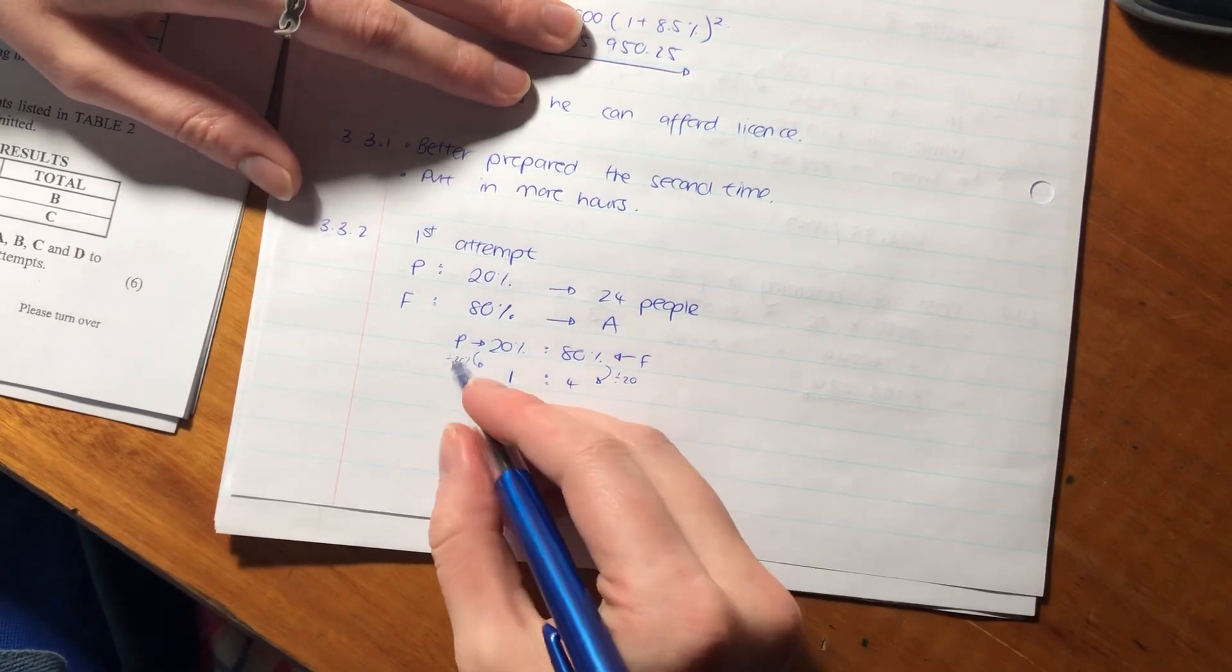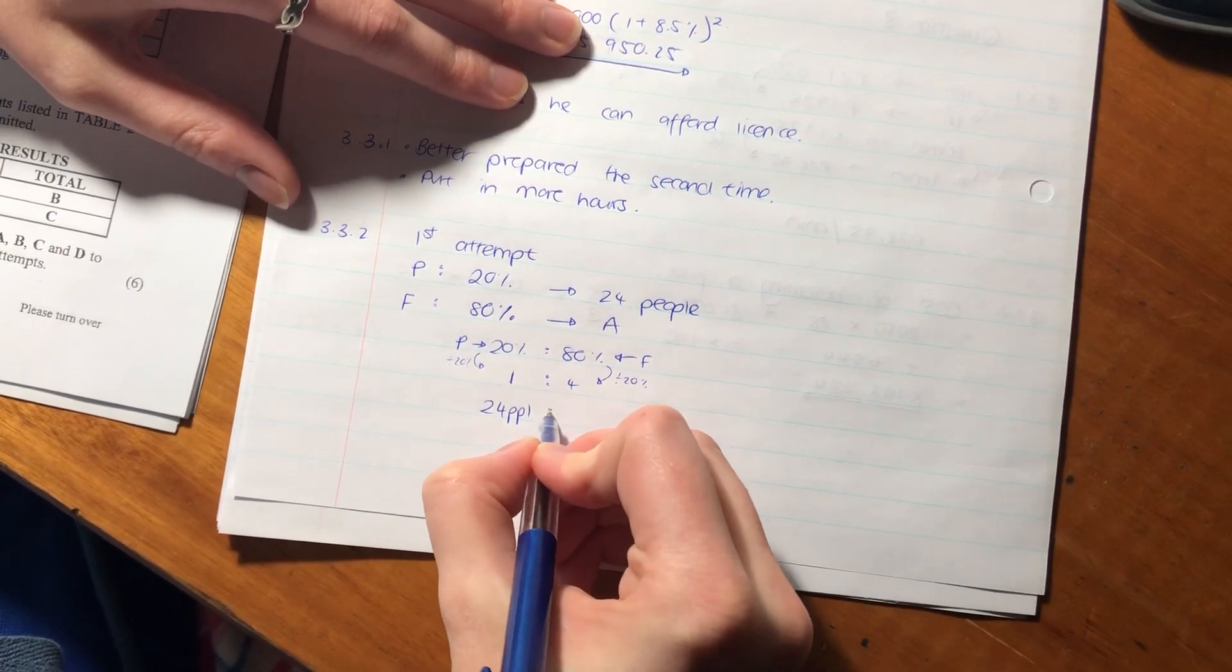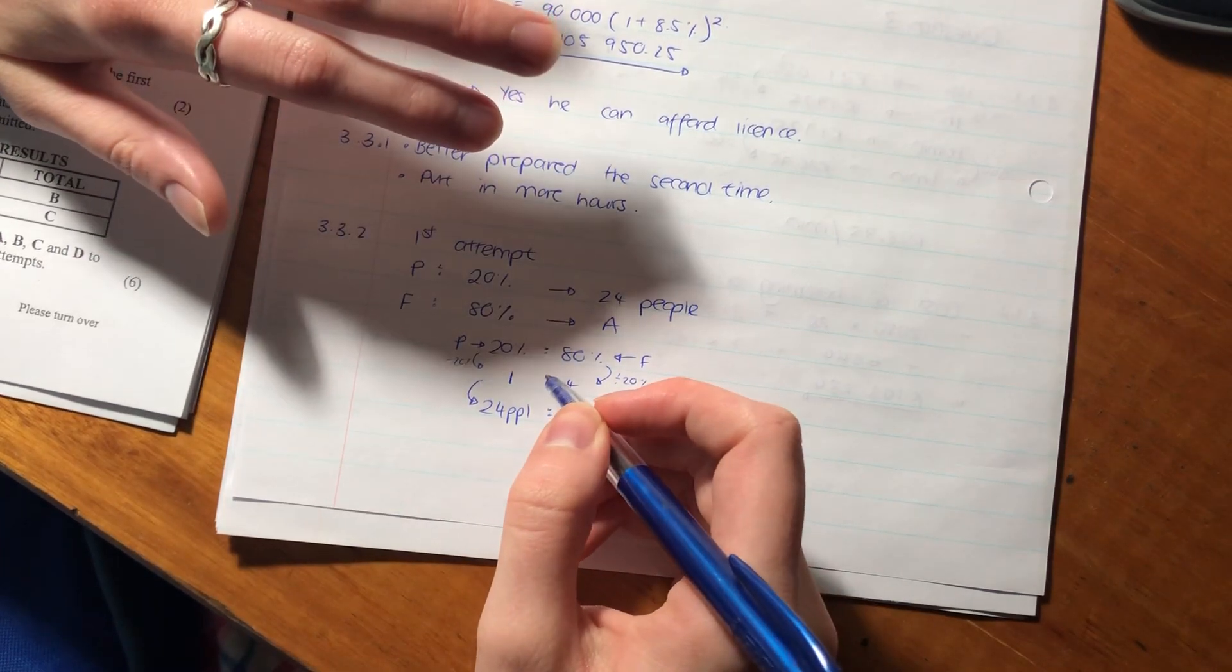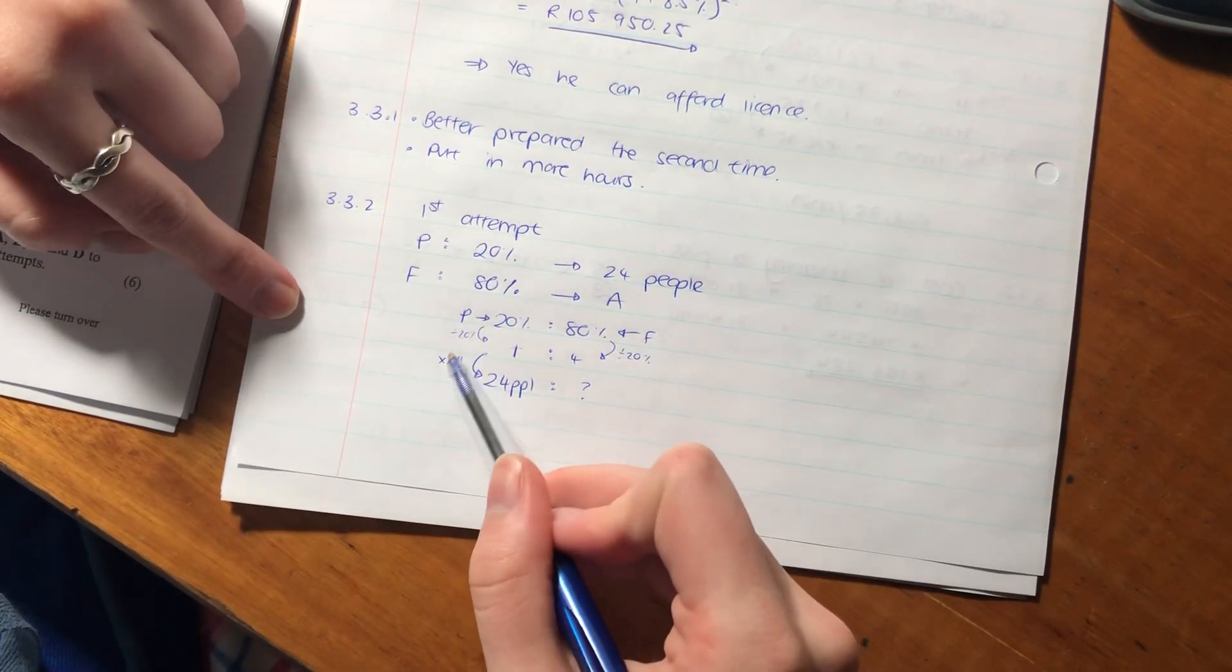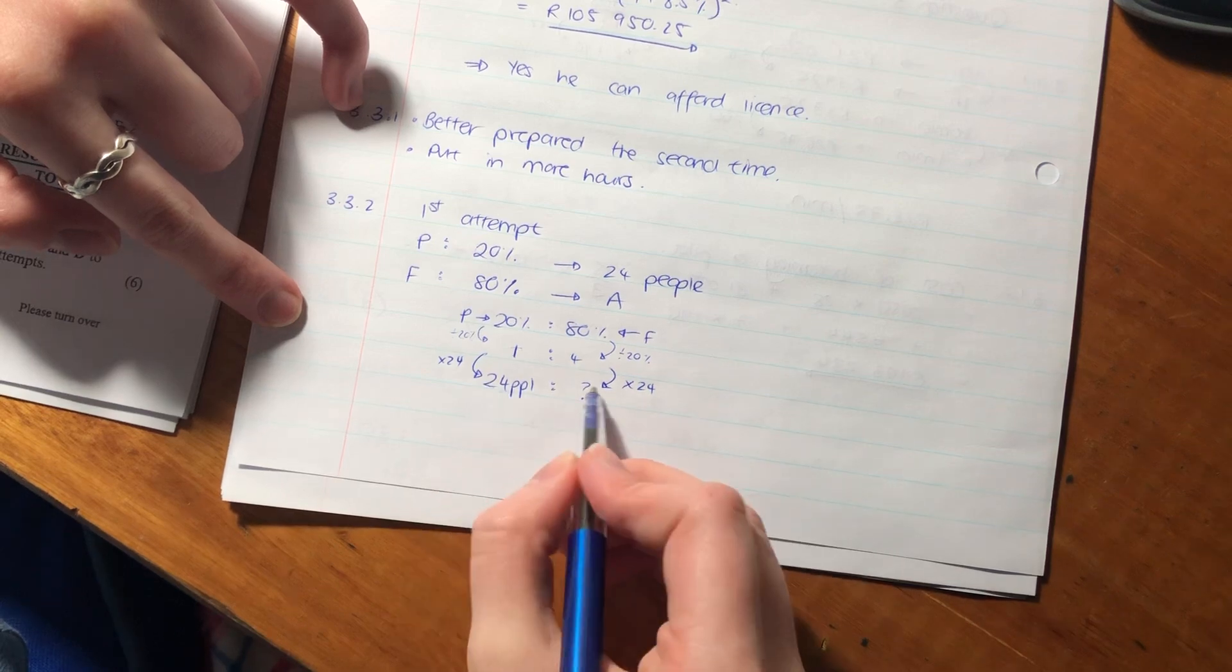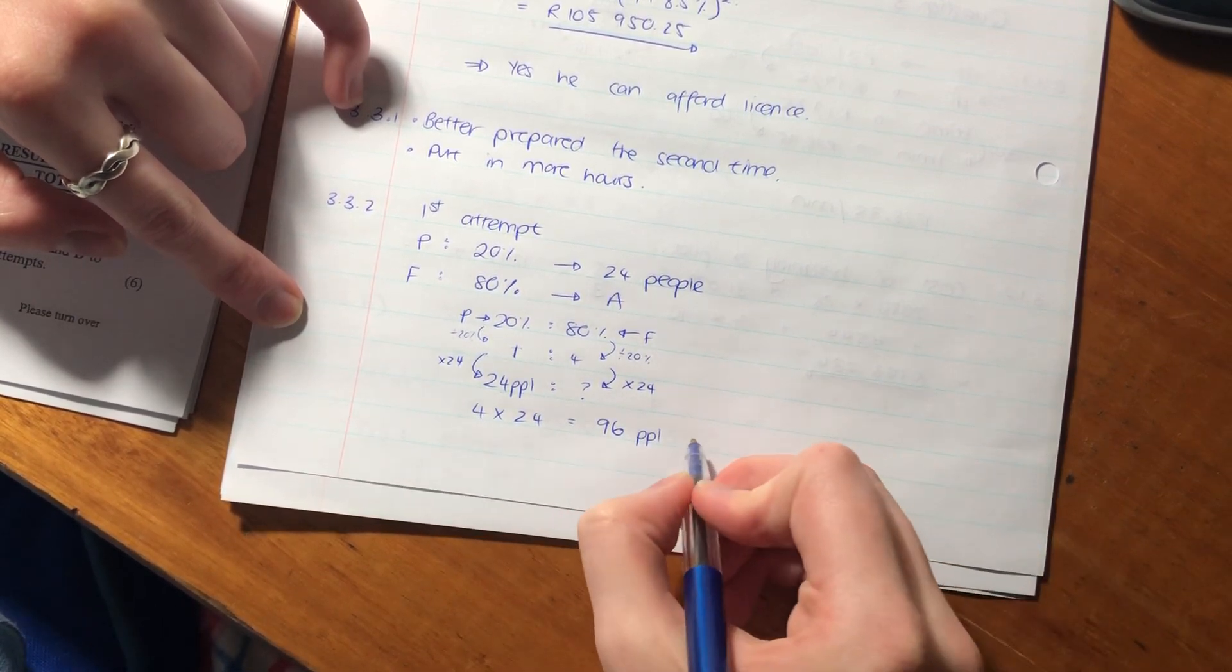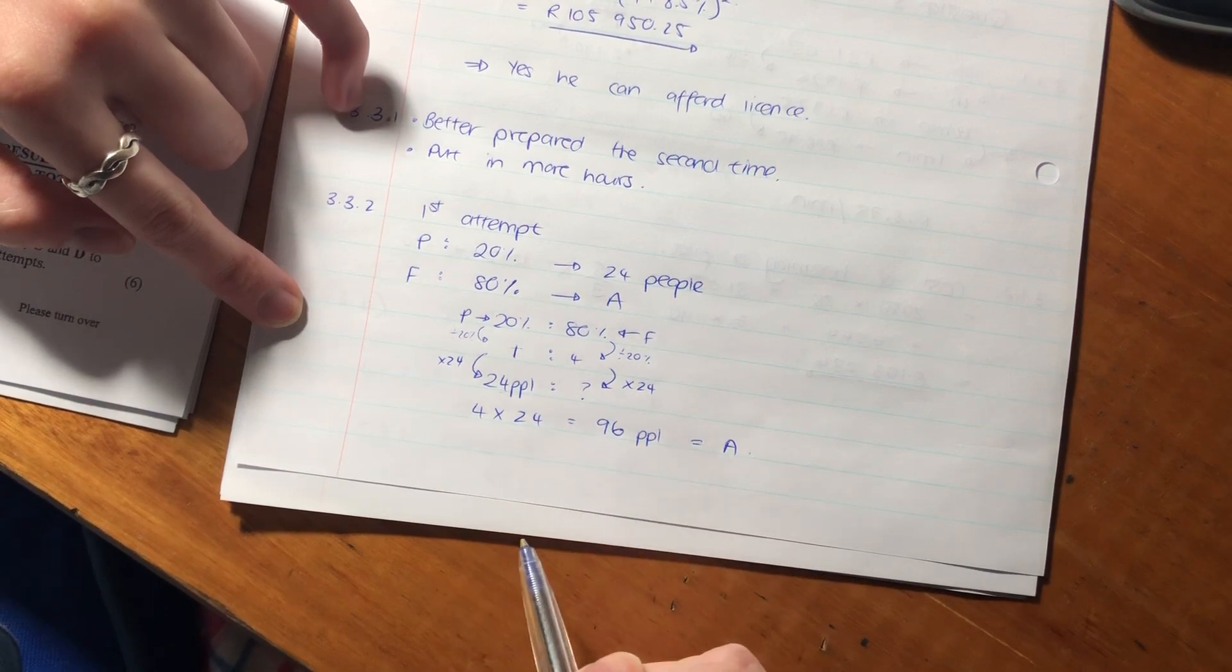When we do something to one side of a ratio, we must always do the same thing to the other side. So if 20% equals 24 people, what does 80% equal? To get from 1 to 24, we multiply by 24. What we do to one side, we do to the other to conserve the ratio. So 4 times 24 equals 96 people. That is the value of A.